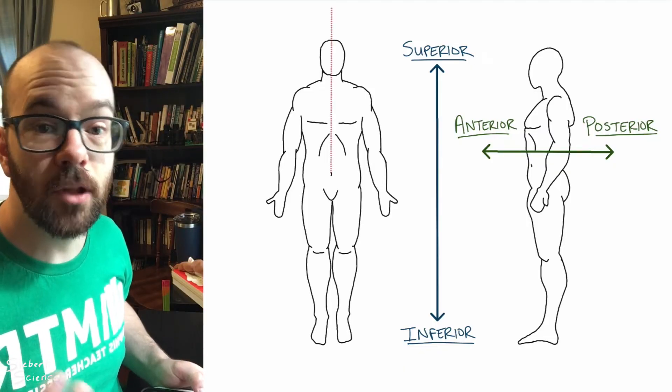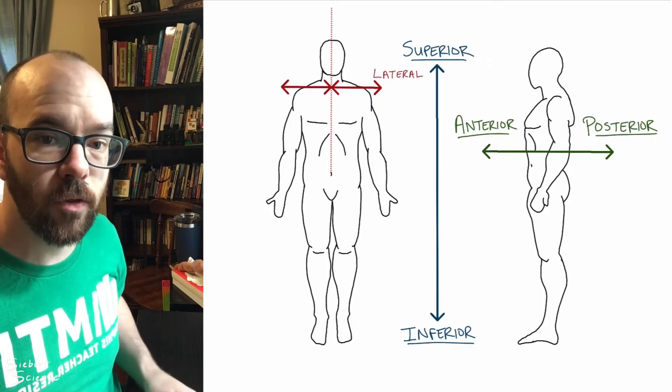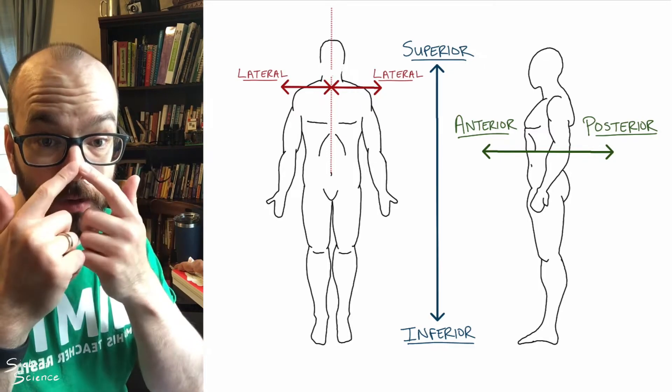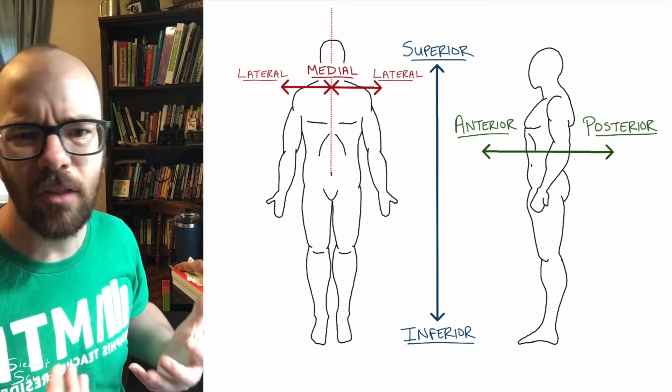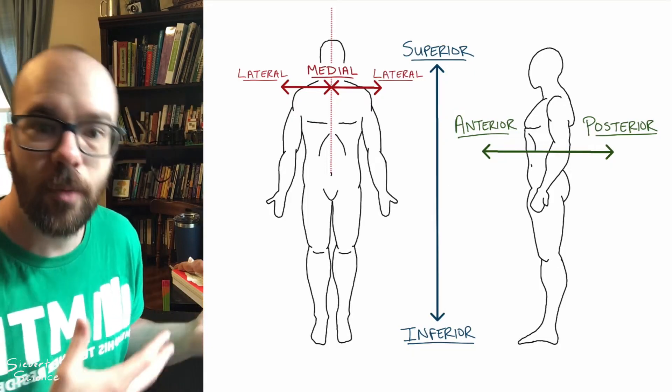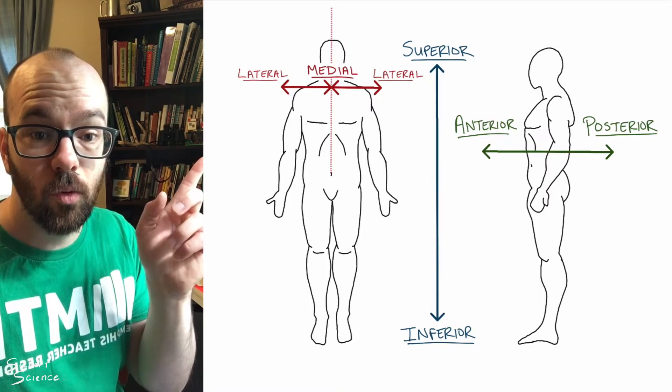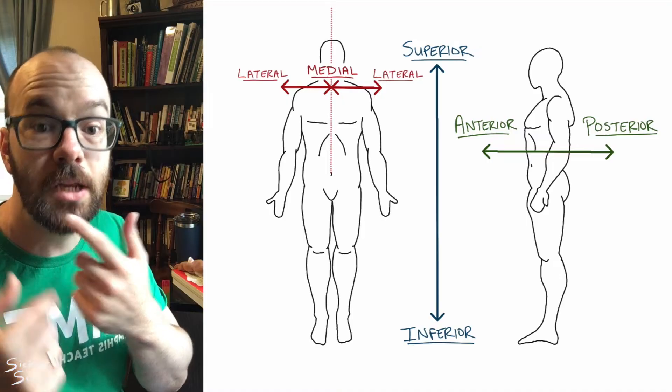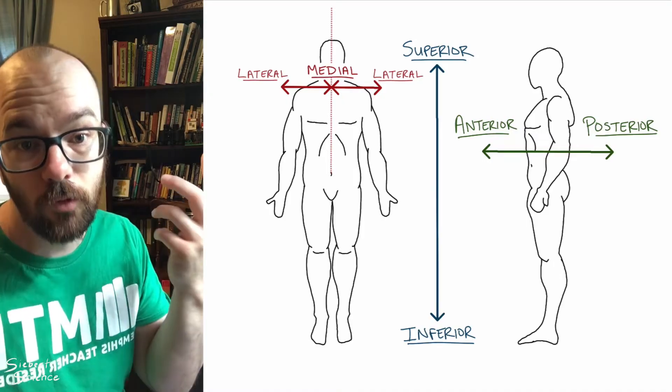Next, we have medial and lateral. Lateral means toward the sides. So for example, my ears are more lateral than my nose, which is very medial. I think of laterals like a lateral in football where you throw the ball to the side. So lateral means toward the side. Your eyes are more lateral than your nose, but your mouth is more medial than your ears, for example.